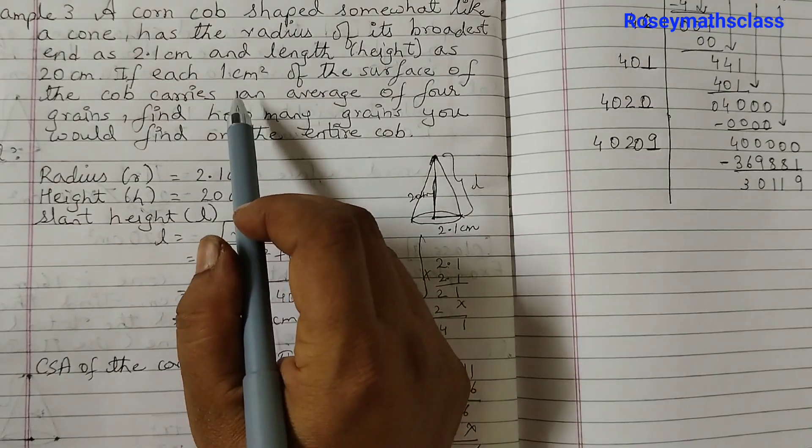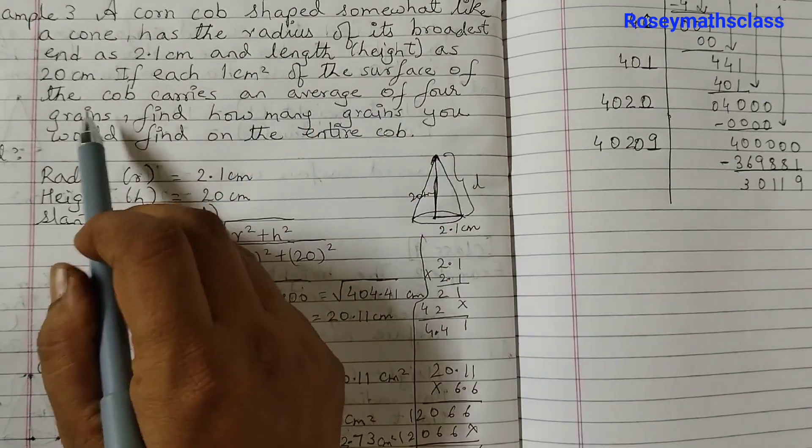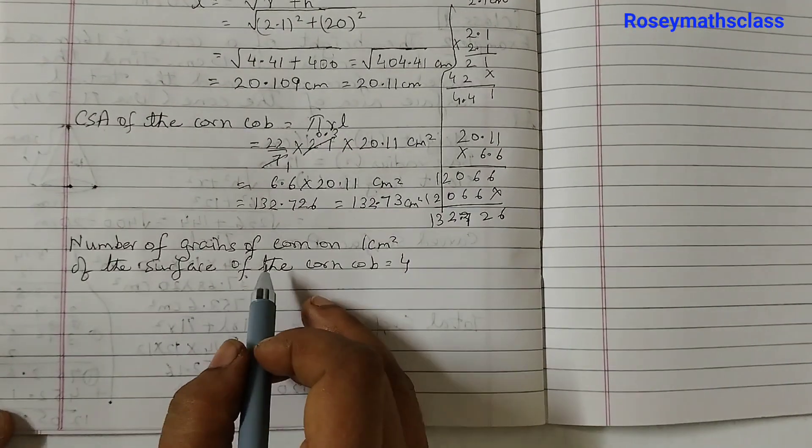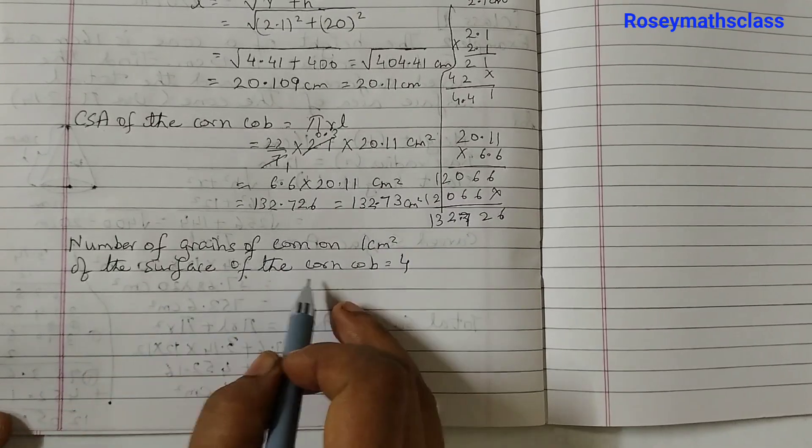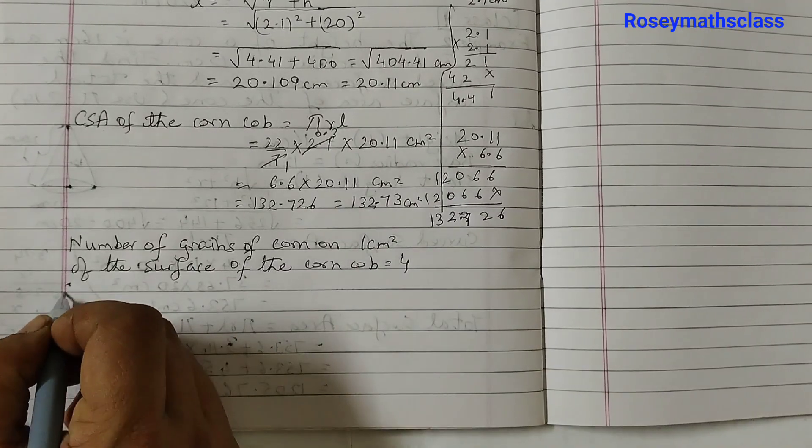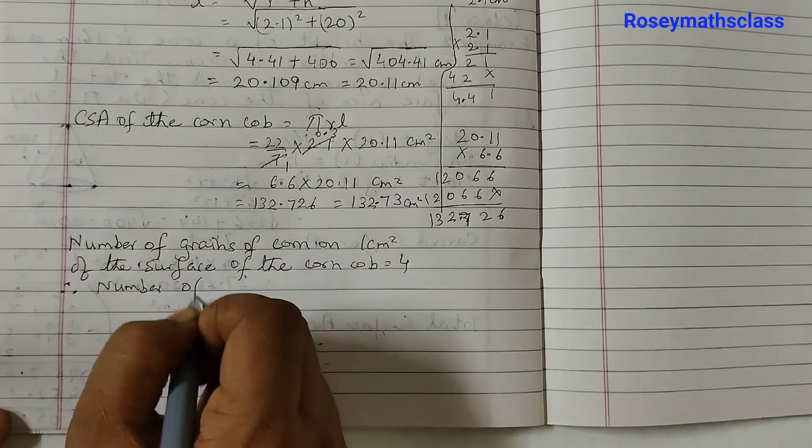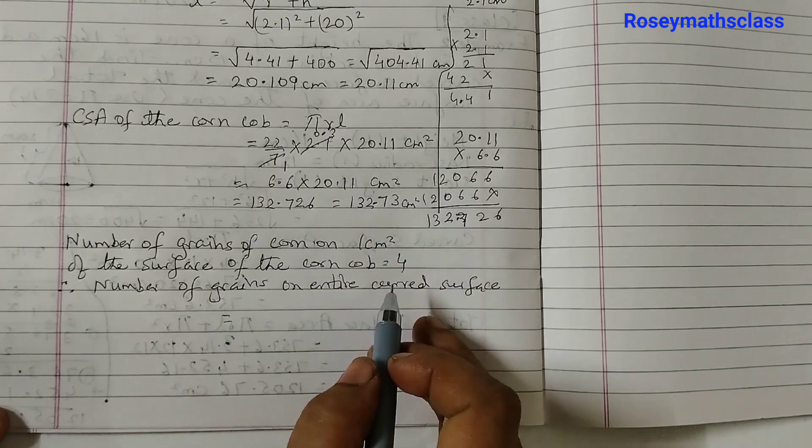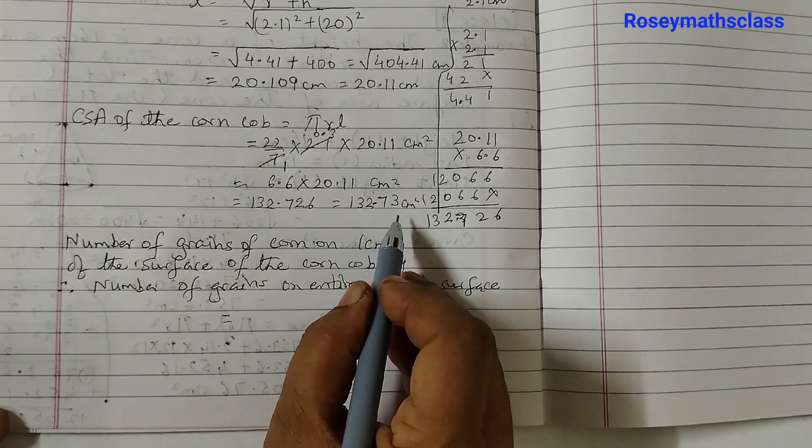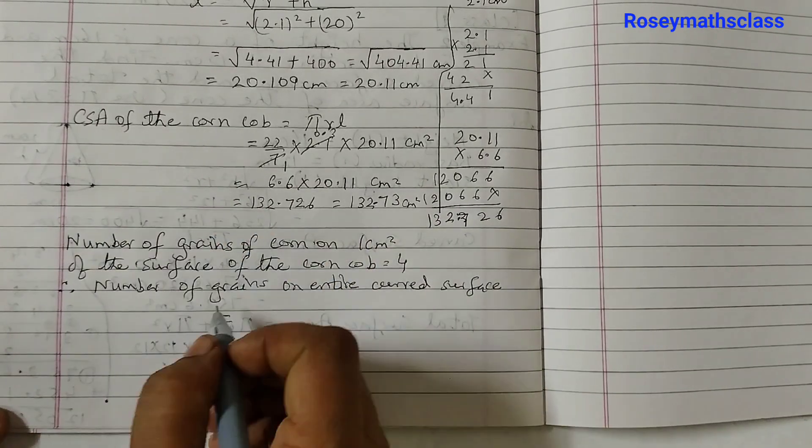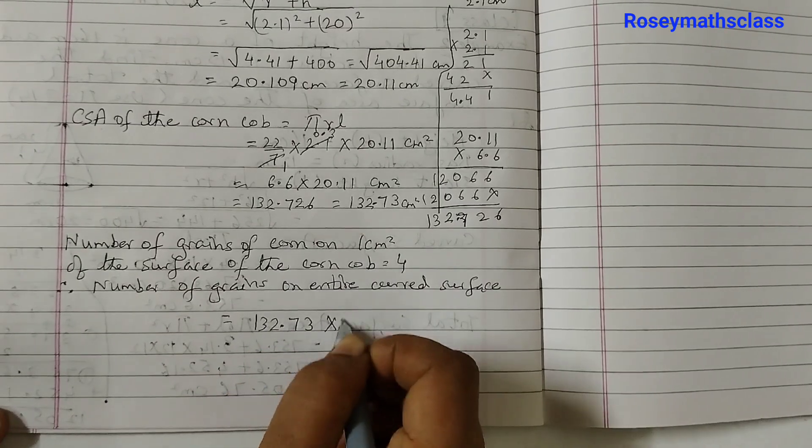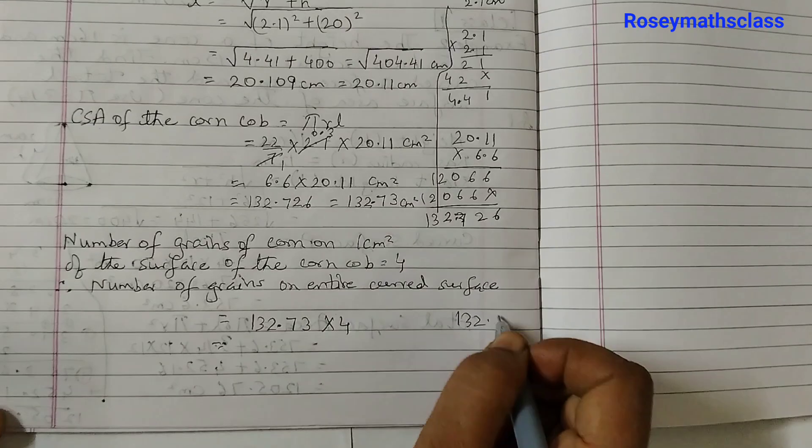Now it is given that 1 square centimeter of the surface of the cob carries average of 4 grains. So we can write that number of grains of corn on 1 square centimeter of the surface is equal to 4. Therefore, number of grains on entire curved surface equals to multiply 132.73 because this is the curved surface area of the corn. So 132.73 into 4.